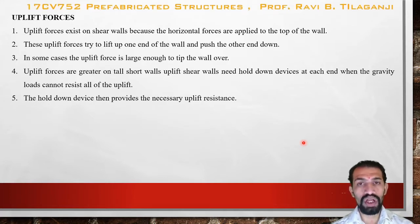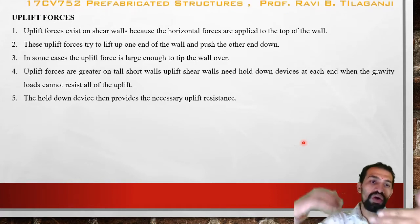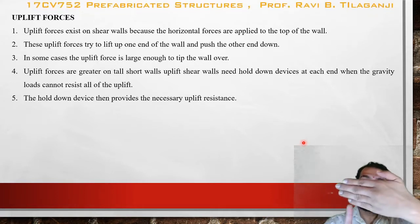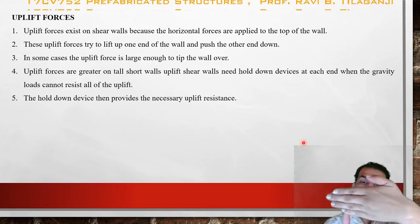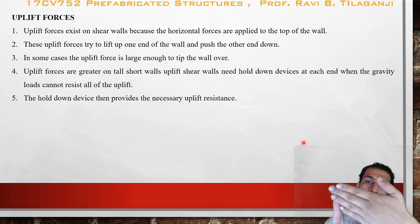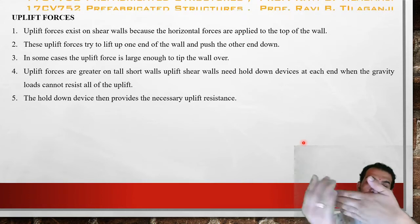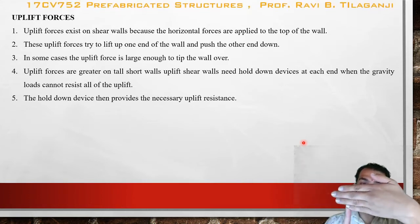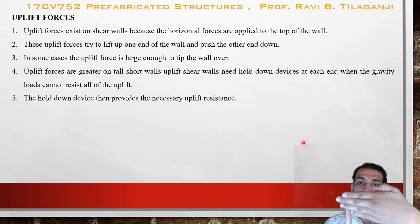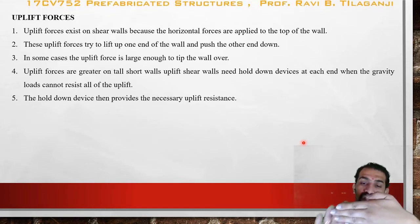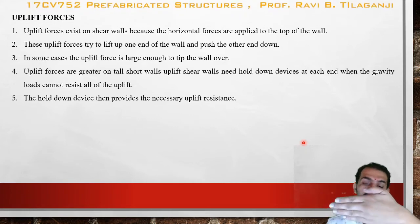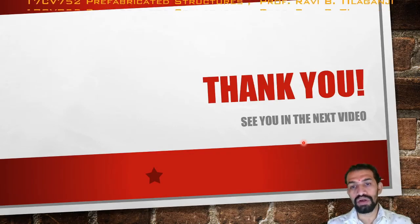Uplift shear walls need hold-down devices at each end when gravity loads cannot resist all the uplift. The hold-down devices then provide the necessary uplift resistance. When uplift pressure tips up one end of the wall, the wall becomes inclined — one side settles while the other is lifted. By holding down the lower side, the uplift pressure cannot cause movement in the wall, thus restricting uplift and preventing settlement of the structure. Thank you, and see you in the next video.